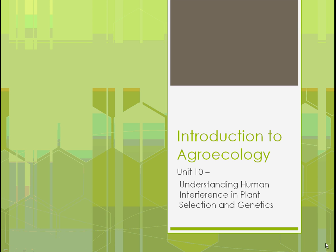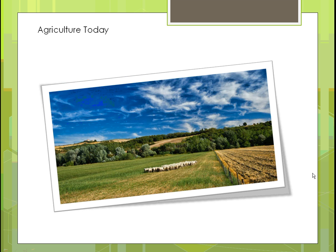Welcome back to Introduction to Agroecology. This is Unit 10: Understanding Human Interference in Plant Selection and Genetics. Basically, what we'll be talking about in this unit is what we as a human population have done that we thought was good to feed the world population, and what we're finding out isn't very sustainable for the long-term future.